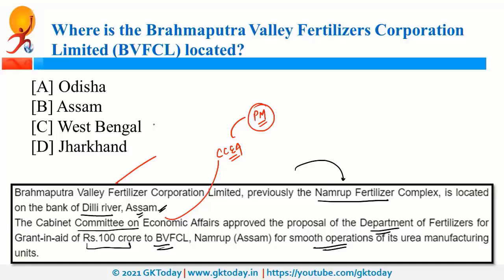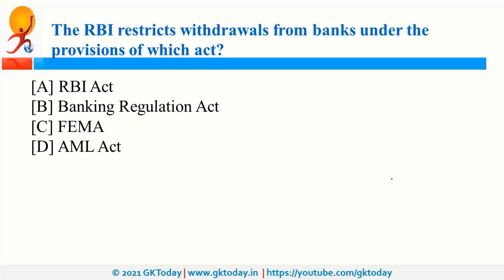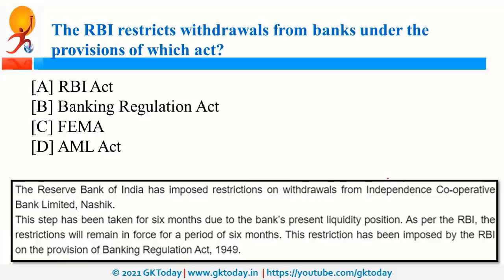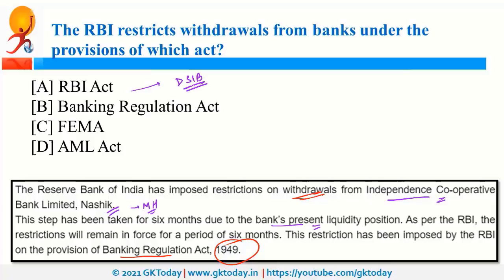RBI — Reserve Bank of India — is the regulator of the banking sector and can impose restrictions on withdrawals from specific banks under the provisions of the Banking Regulation Act of 1949. This was in news because RBI recently imposed restrictions on withdrawals from Independence Cooperative Bank Limited, situated in Nasik, Maharashtra, due to the bank's present liquidity position. RBI was also in news because of DSIB — Domestic Systemically Important Banks — which are vital for the economy.